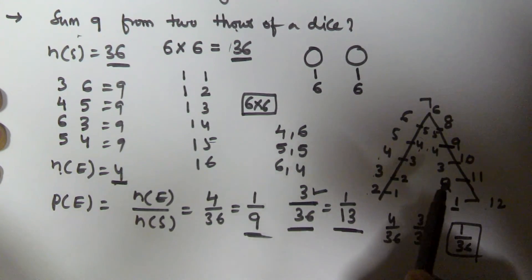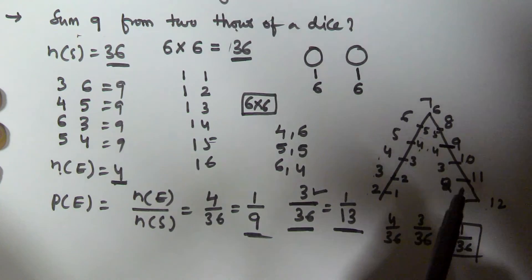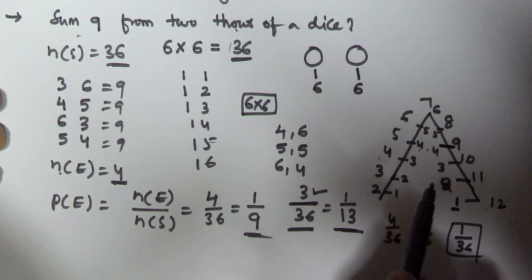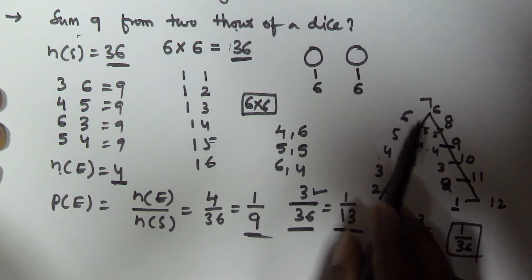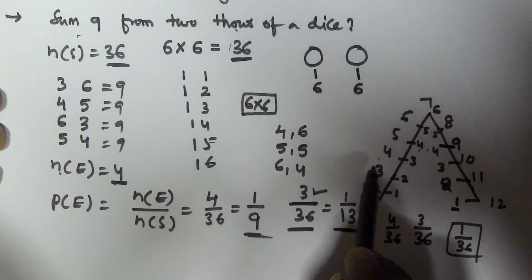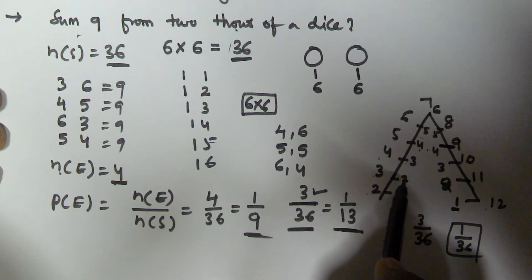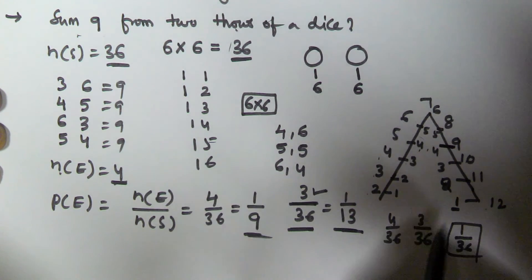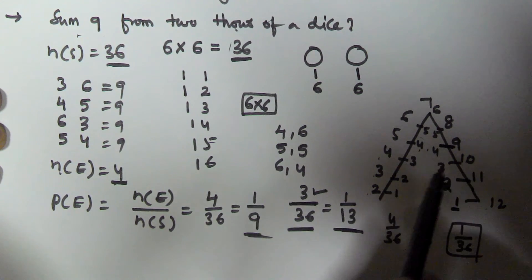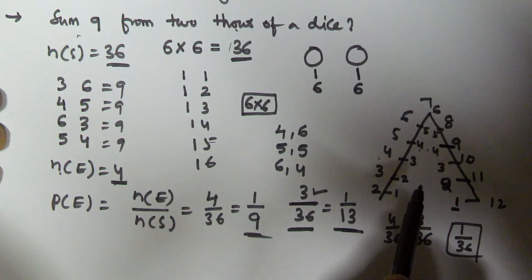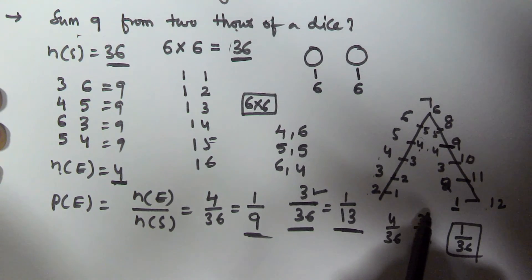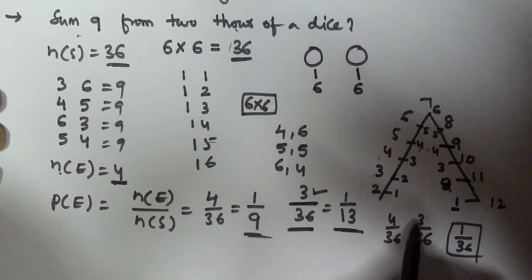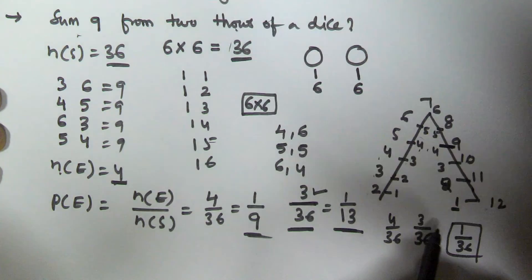Using this pyramid concept you can easily calculate the sum of the numbers on 2 dice whenever you are throwing them. Sum 2 comes 1 time, sum 3 comes 2 times, sum 4 comes 3 times, and so on. I hope you got this. Thank you very much for watching this video, and please subscribe to my channel.